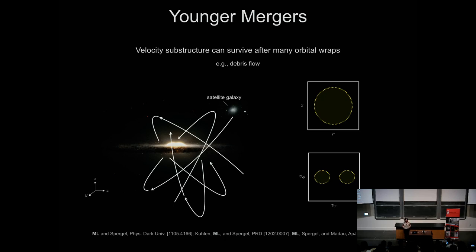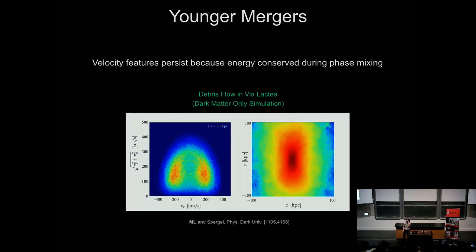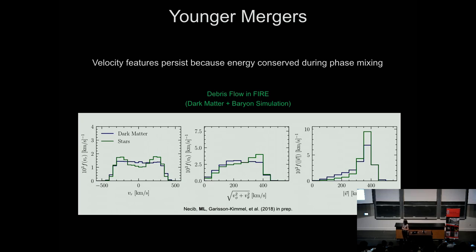However, energy is conserved in this process, and so what that ends up meaning is that we actually still see really interesting features in velocity space, even if all of the material is spread out spatially. We can see this in simulations — this is work from 2011 where we were looking at a dark matter only simulation. If we look at dark matter particles that spatially look unremarkable, when we look at them in velocity space we actually see interesting patterns — lobes in radial velocity and tangential velocity.